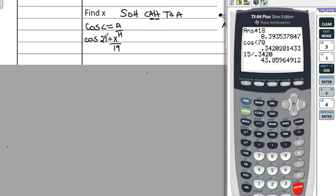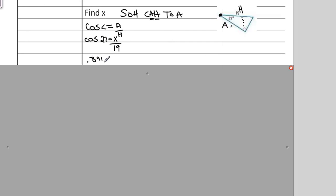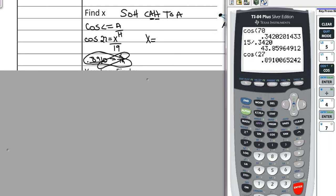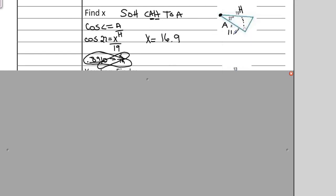I need to figure out what the cosine of 27 is. And that's .8910. And that equals x over 19. And I'm going to put this over 1 and cross multiply. So I get x times 1, which is x, equals .8910 times 19. So I can just take this .8910 and multiply it by 19. So I get x is 16.93 or just 16.9.